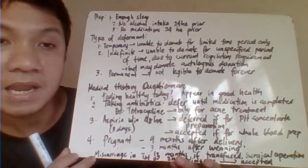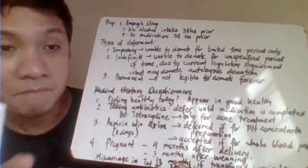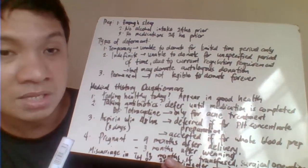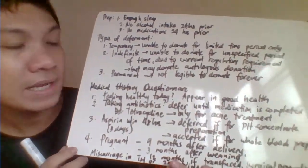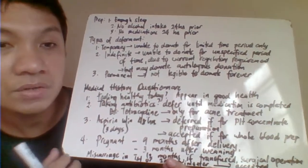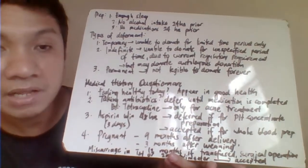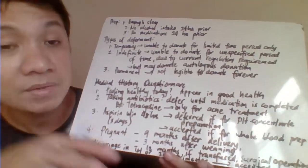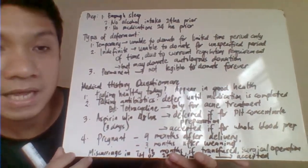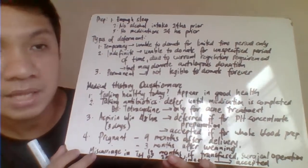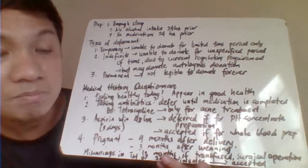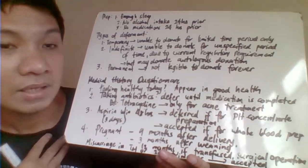Temporary deferment means the patient will not be allowed to donate for a certain short period of time. Indefinite deferment is a longer duration — we don't know exactly when the patient will be allowed to donate, often because of certain regulations in a particular country. Permanent deferment means the patient will not be allowed to donate forever, such as for conditions like HIV or hepatitis B which remain in the body permanently.